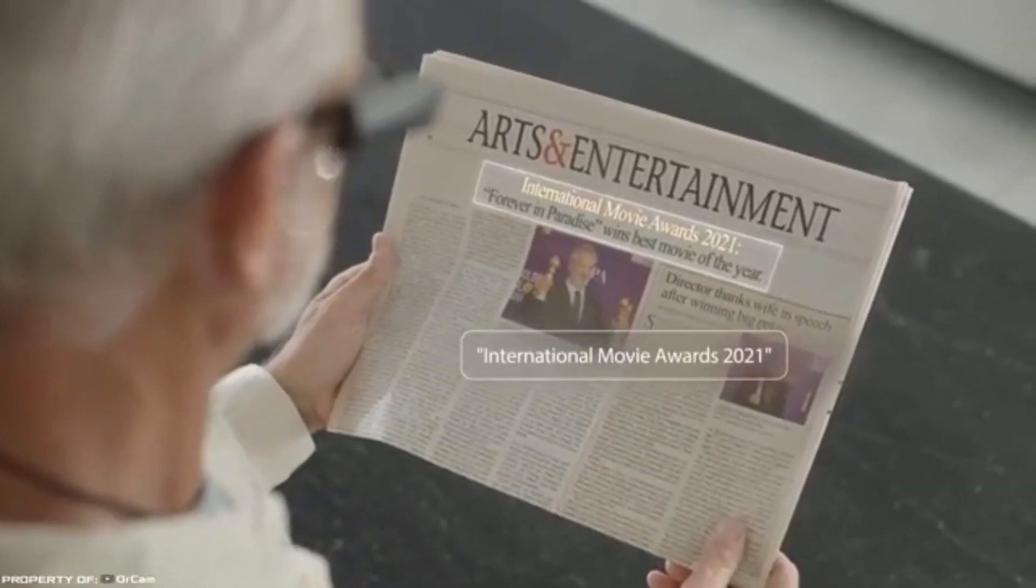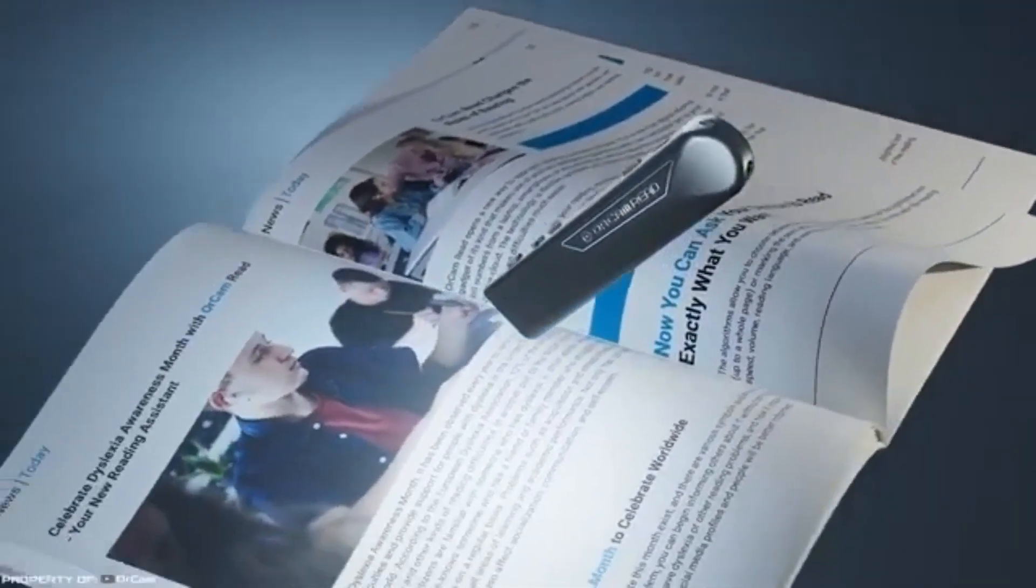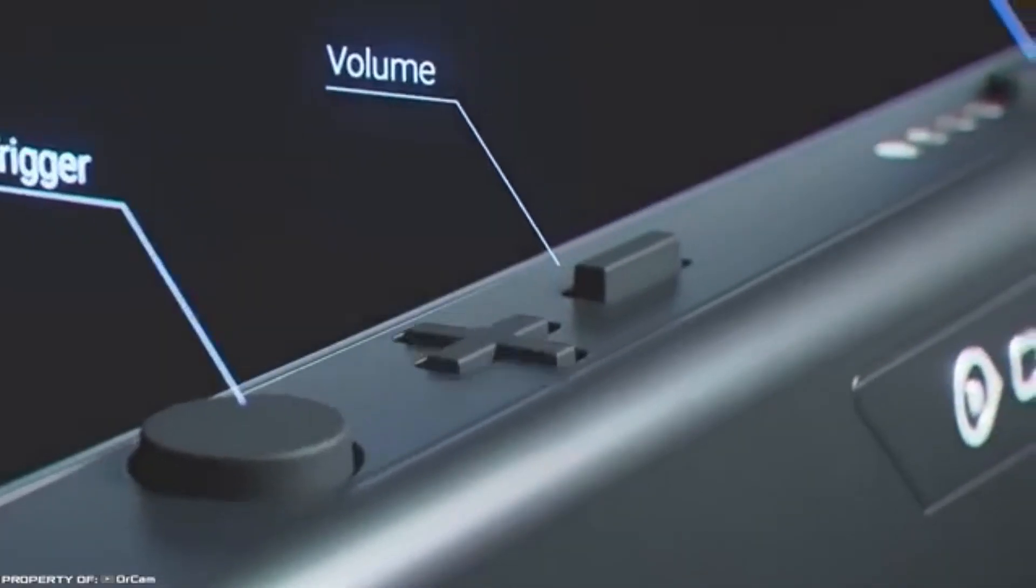For example, you can ask the gadget to read the headlines in the newspaper and then voice the interesting article. In addition, the device quickly and accurately responds to pointing gestures, identifies barcodes and banknotes. My Pro is equipped with a fast processor, two microphones, and has a long-lasting battery life.